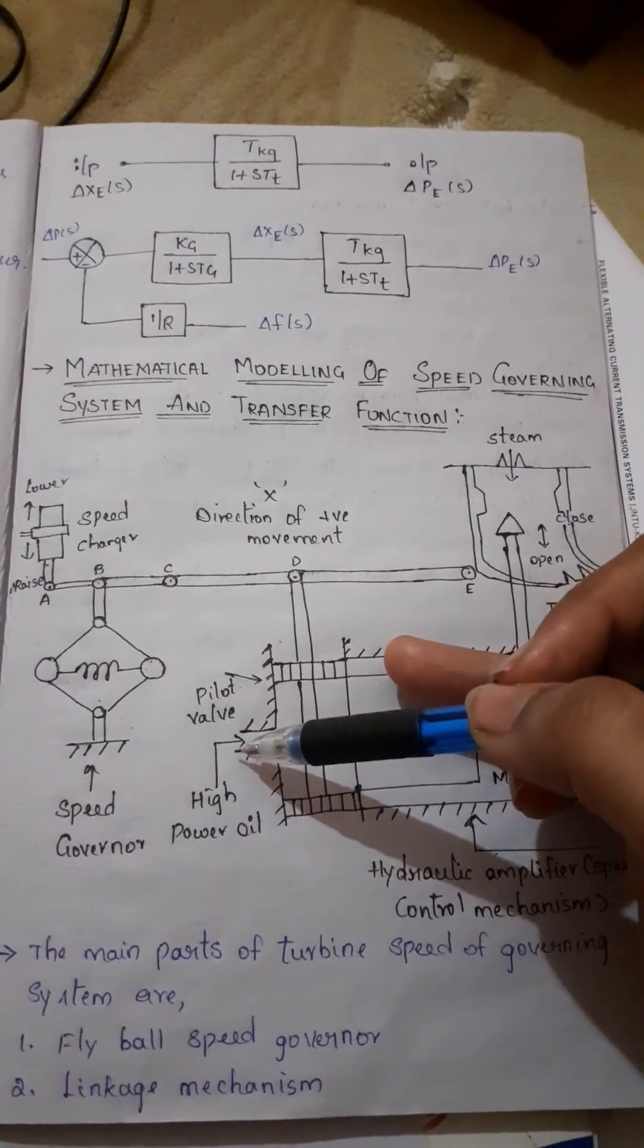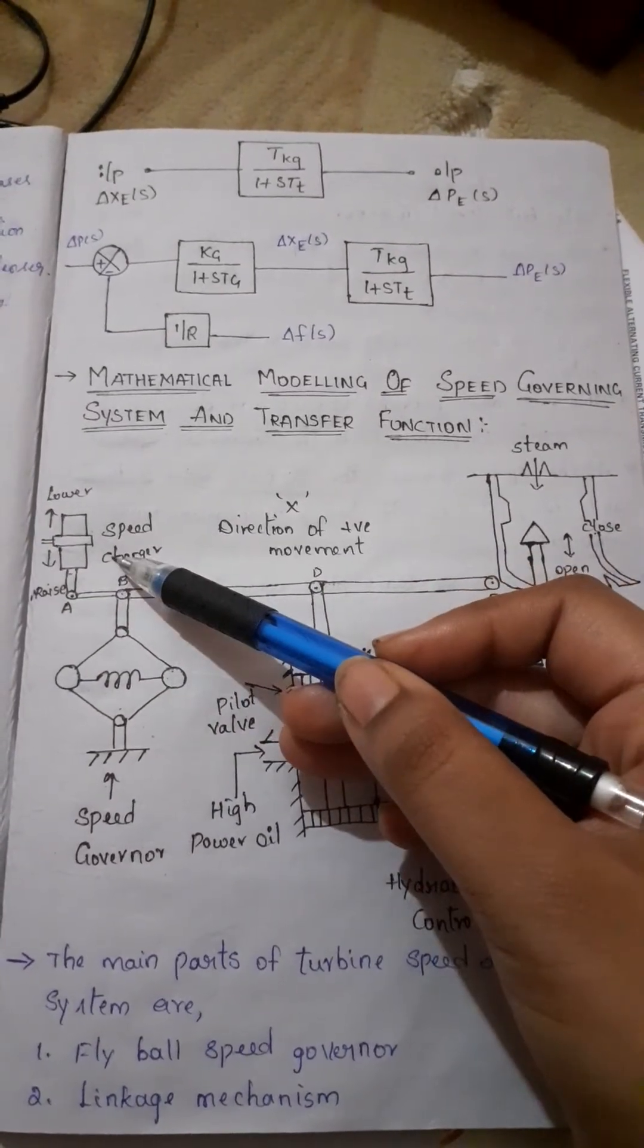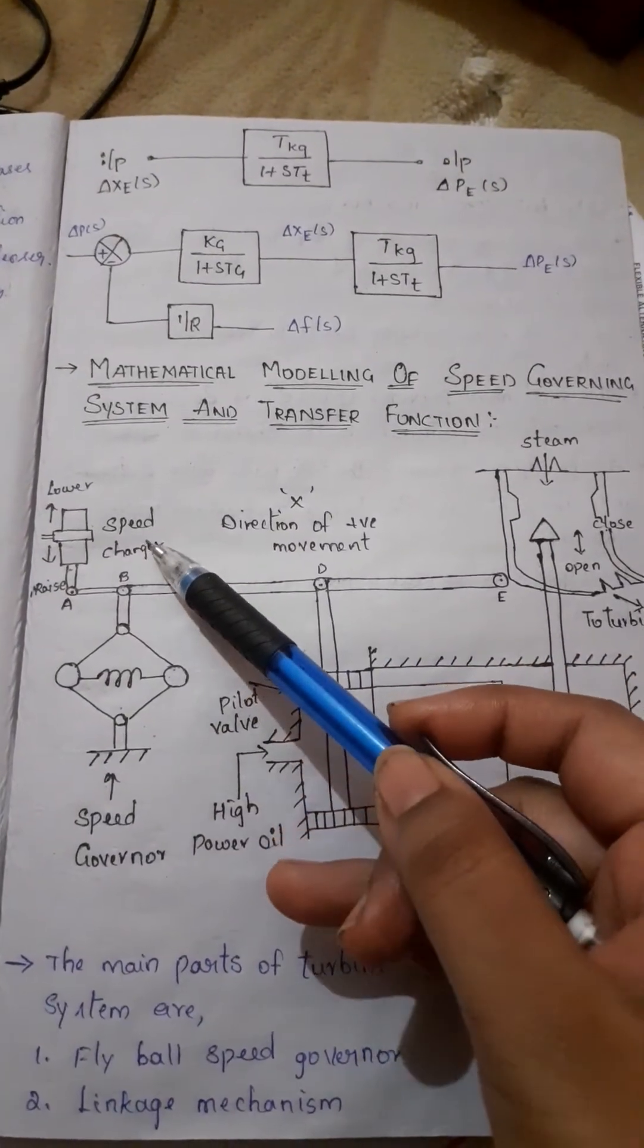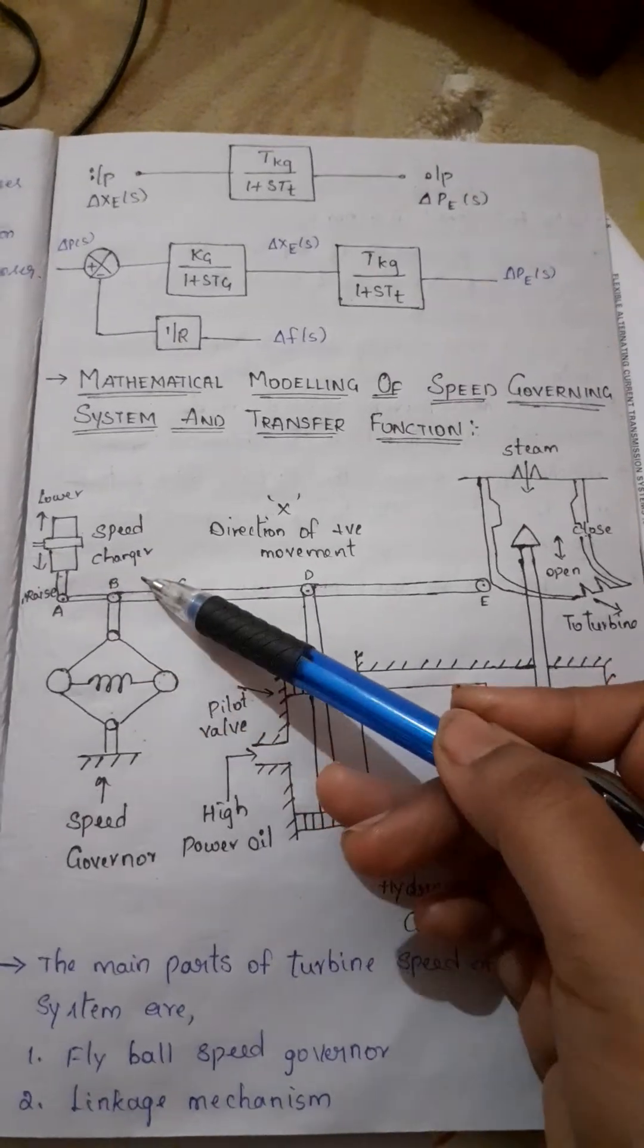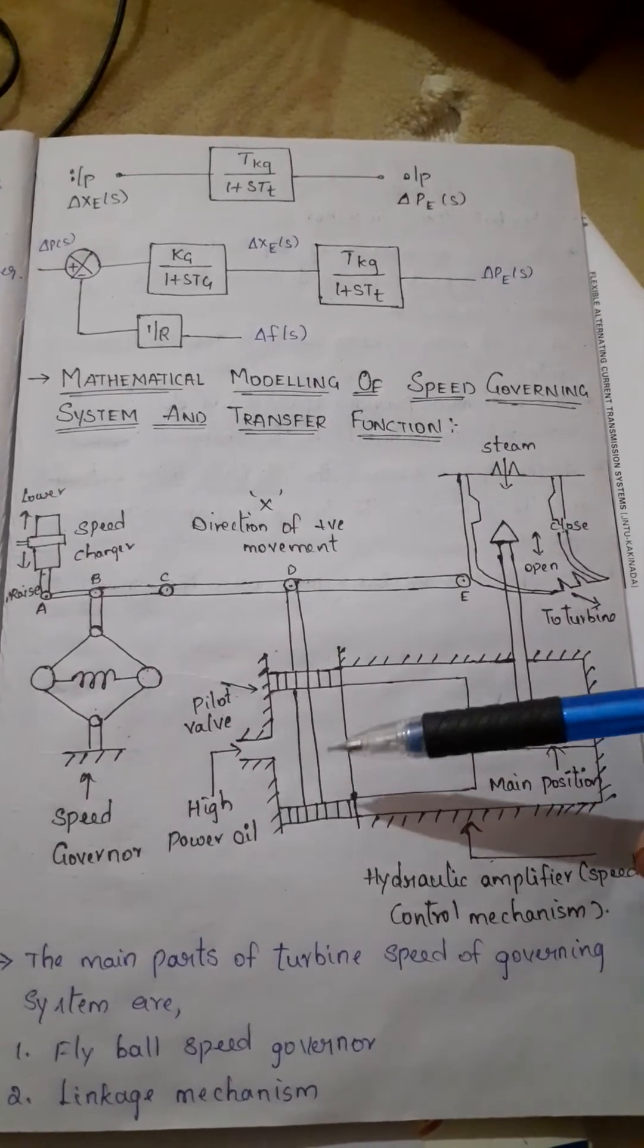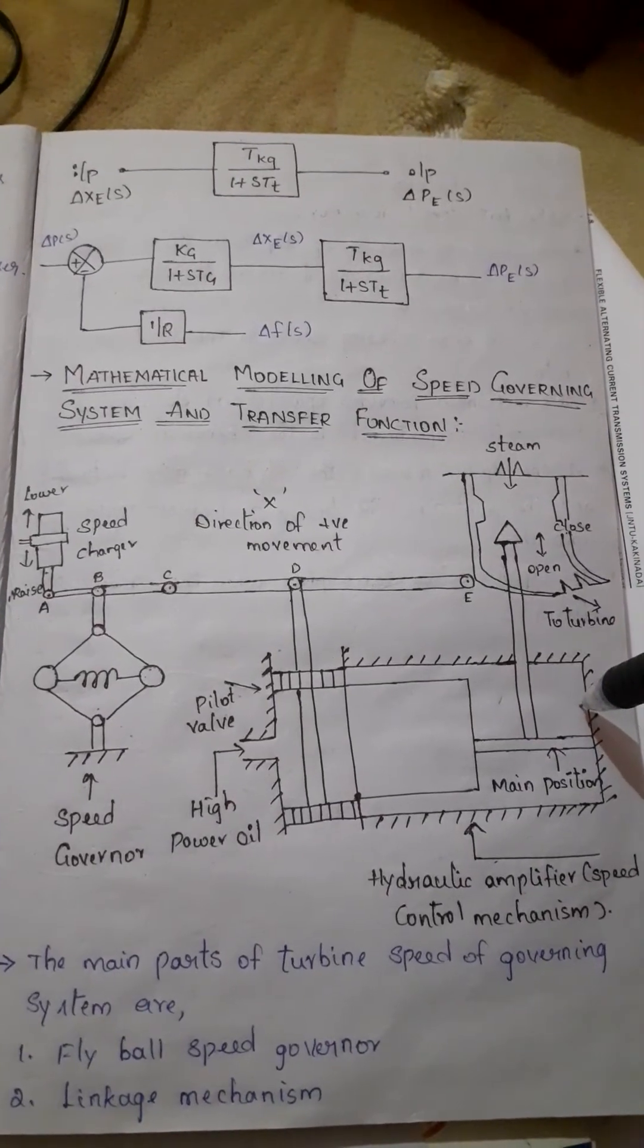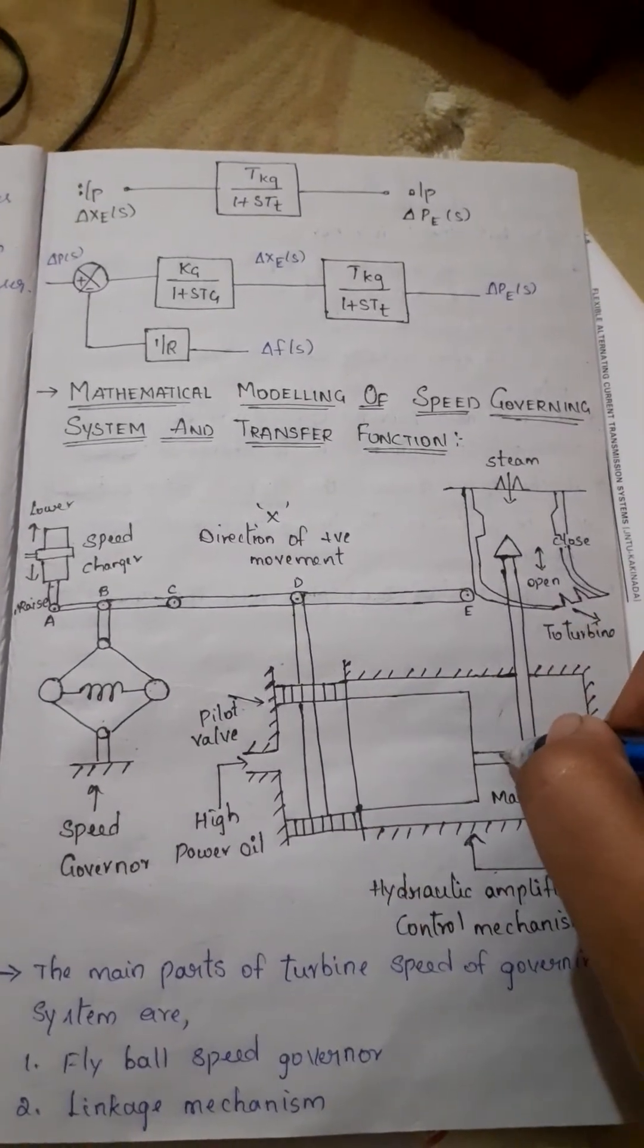The last part is speed changer. It provides a steady state power output setting for the turbine. It provides steady state power output to the turbine. Its downward movement opens the upper pilot valve so that more steam is admitted to the turbine under steady state conditions.